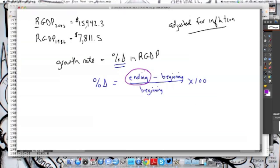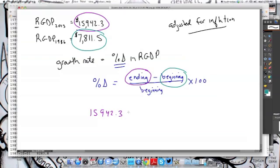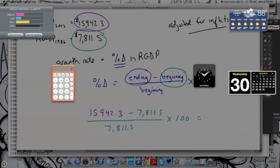The ending value is going to be what we're ending at, which is the 2013, so it would be 15,942.3. You're going to subtract the beginning value, and that beginning value is going to be 7,811.5, and we want to divide it by that beginning value, 7,811.5. Multiply that by 100, and let's see what we get. Let's go to our calculator.